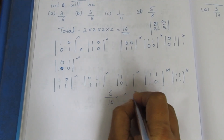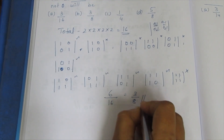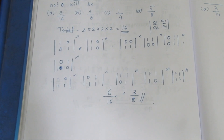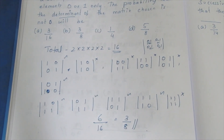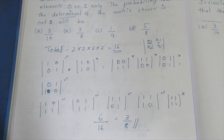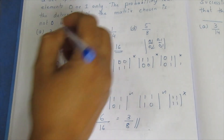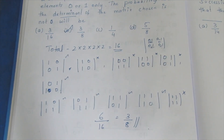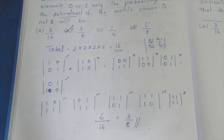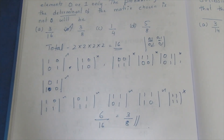3 by 8 is the answer. That is Option B. The correct answer for this sum is 3/8. Thank you.